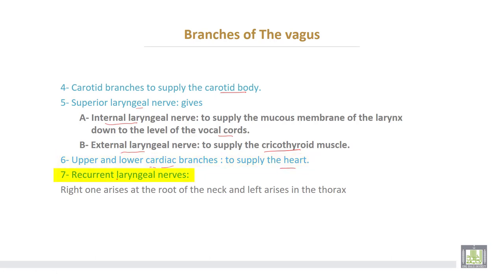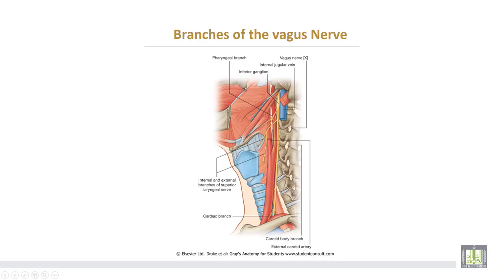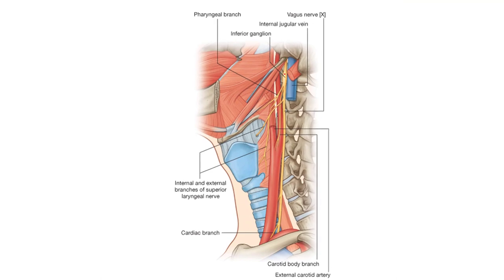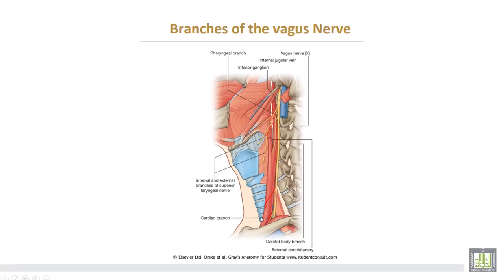Upper and lower cardiac branches supply the heart. Lastly, the recurrent laryngeal nerve — the right one arises at the root of the neck and the left one arises in the thorax. The diagram shows the vagus nerve with the superior ganglion above, the inferior ganglion, the pharyngeal branch, the superior laryngeal nerve, the recurrent laryngeal nerve, and the cardiac branches of the vagus nerve.